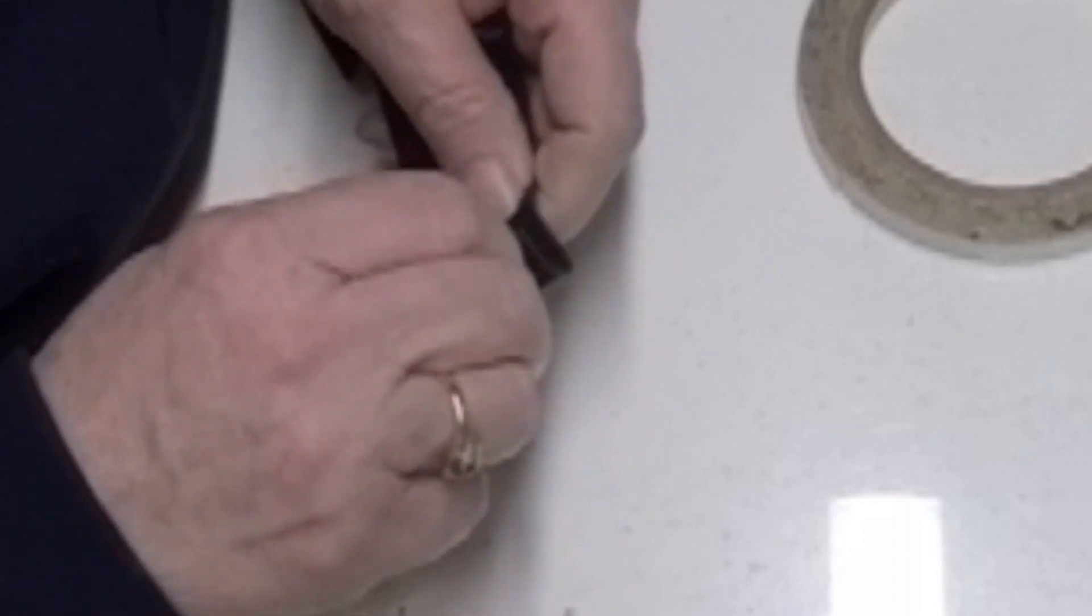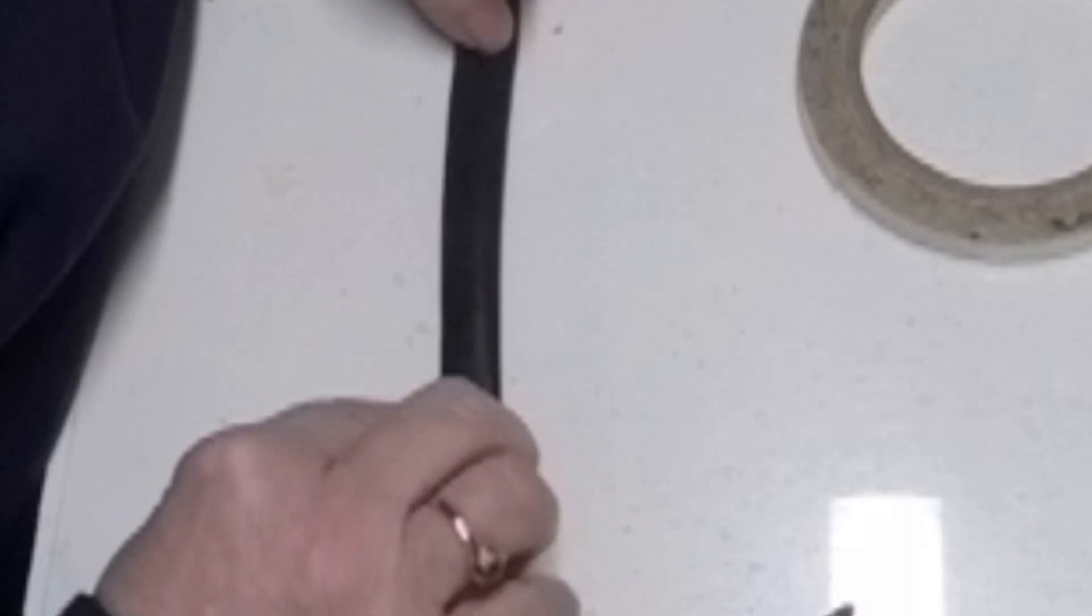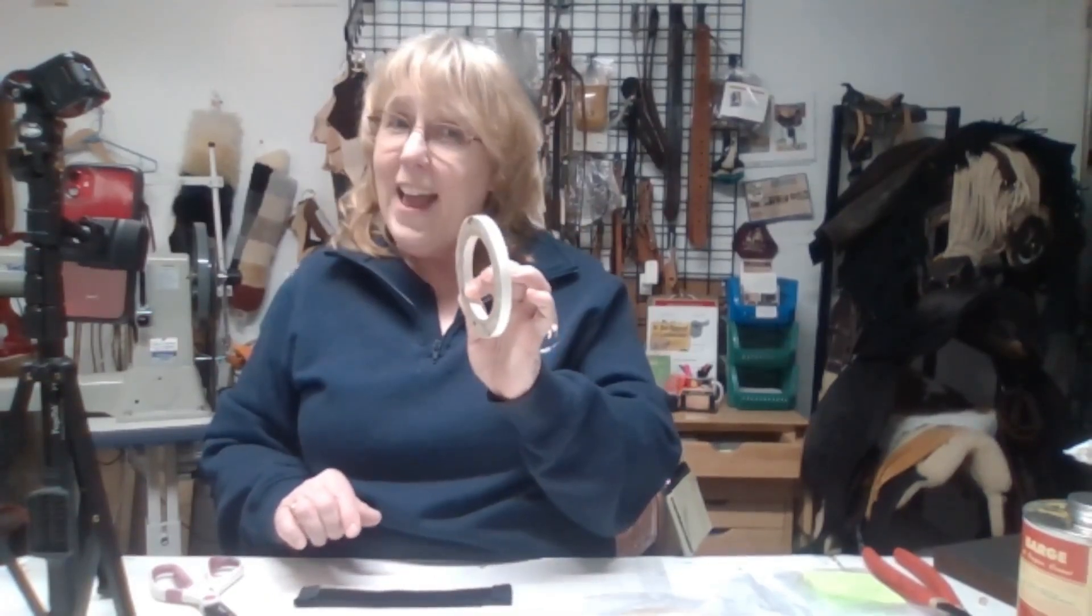It's not going to move. It's going to stay stable and your stitches won't move. You can do that lengthwise too. Whatever you need to tack down, your two-way tape is your friend.